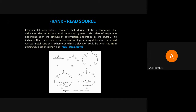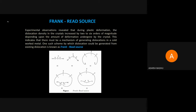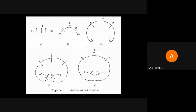So there must be a mechanism for generating dislocations. One such mechanism by which dislocations can be generated from existing dislocations is called the Frank-Read source. That is the main point — dislocation can be generated from an existing dislocation, and this is known as the Frank-Read source.